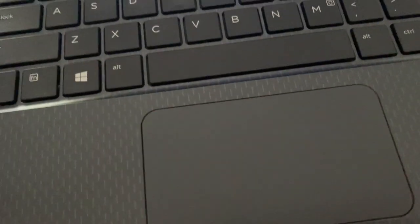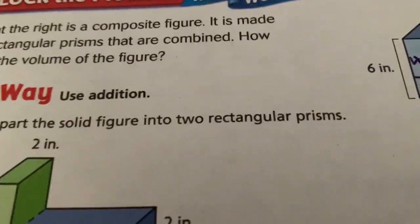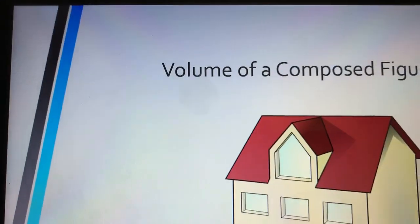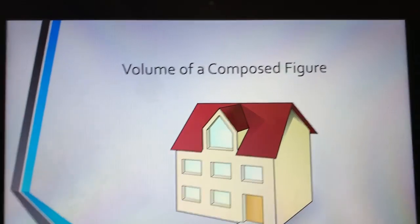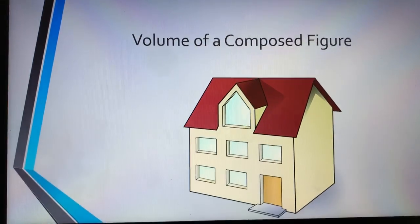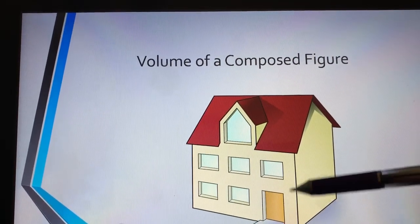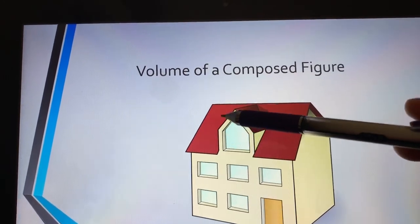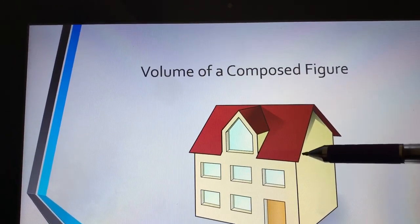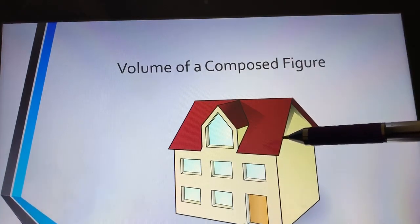I think we need to go back to that at the end when we're done learning how to do this. In the meantime, let's go to the composed figures. Here's an example: you have a house, and if you look at this house you have a rectangular prism at the bottom and a triangular prism at the top.